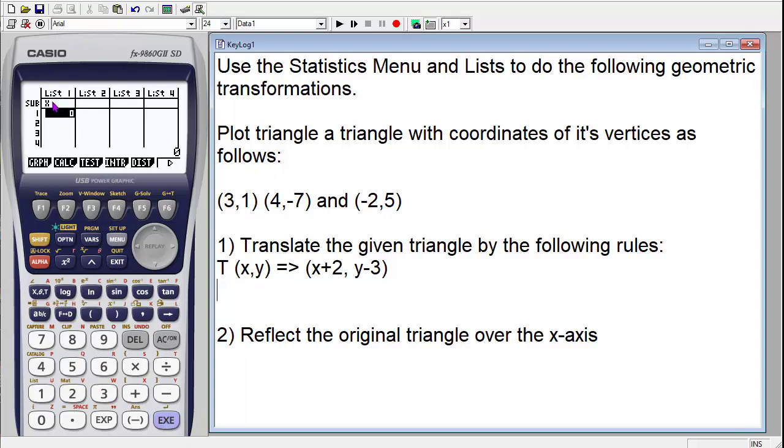Now I've identified list 1 as my x values, and I'm going to do the same thing here. Alpha, the subtract button for the y, hit execute. So now I've identified what each list represents, and now I'm going to enter my coordinates.